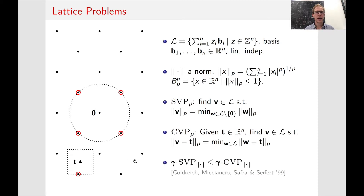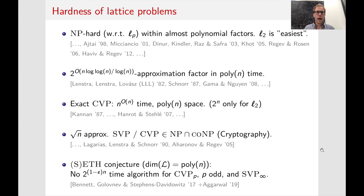It has been shown that SVP is no harder than CVP for any approximation factor and any norm. So if you know how to do CVP, you can also do SVP. Now in a long sequence of work starting in the 80s, it has been shown that these problems are NP-hard for any LP norm and within almost polynomial factors. Depending on the norm considered, the difficulty changed quite a bit in establishing these hardness results.